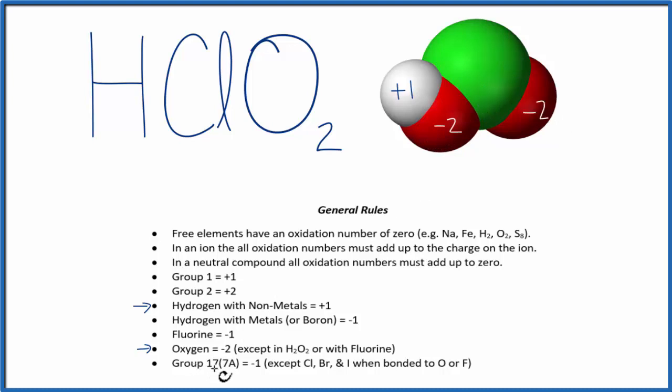Chlorine, that's in group 17, and it normally is minus one, except when it's bonded to these elements, which include oxygen here. So we can't use this rule because the chlorine is bonded to the oxygen. So what we'll do is we know that in a neutral compound, and this is neutral because there's no charge up here, all the oxidation numbers, they add up to zero.